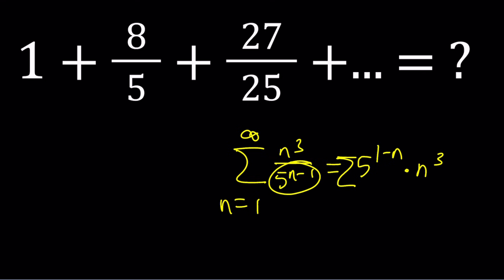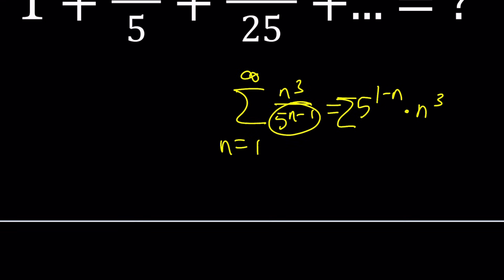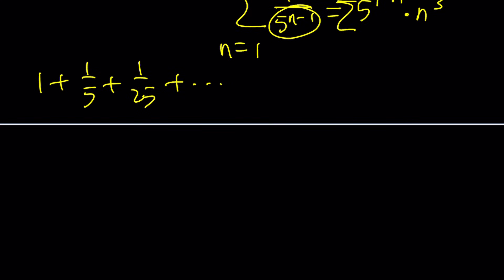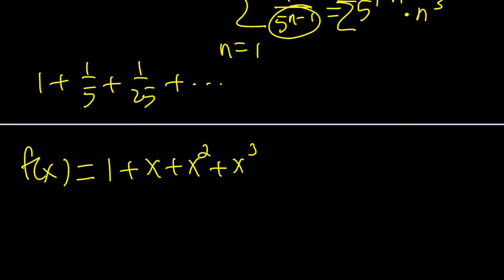So how do we find a sum like this? If you were given 1 plus 1 over 5 plus 1 over 25, you'd probably know what to do because that's the infinite geometric series. And we're definitely going to use that idea. Let's define a function f of x — the famous infinite geometric series — which equals 1 over (1 minus x).